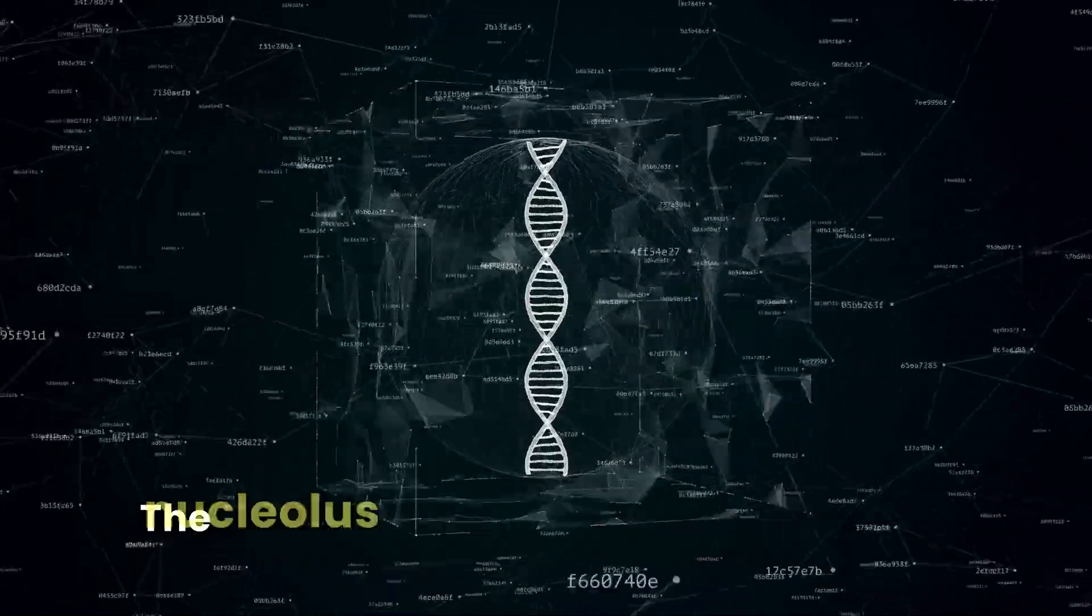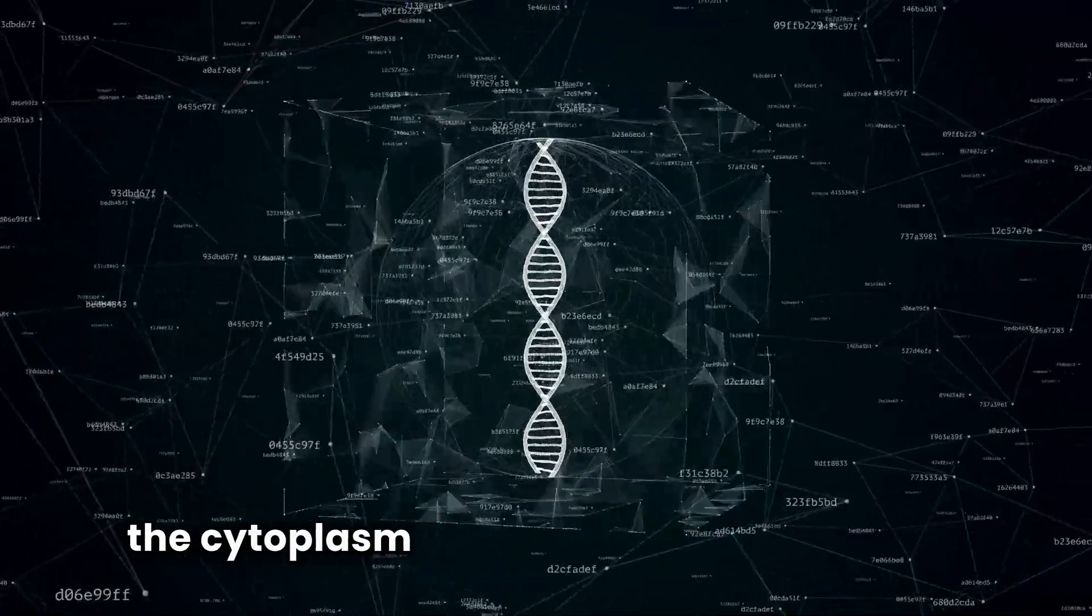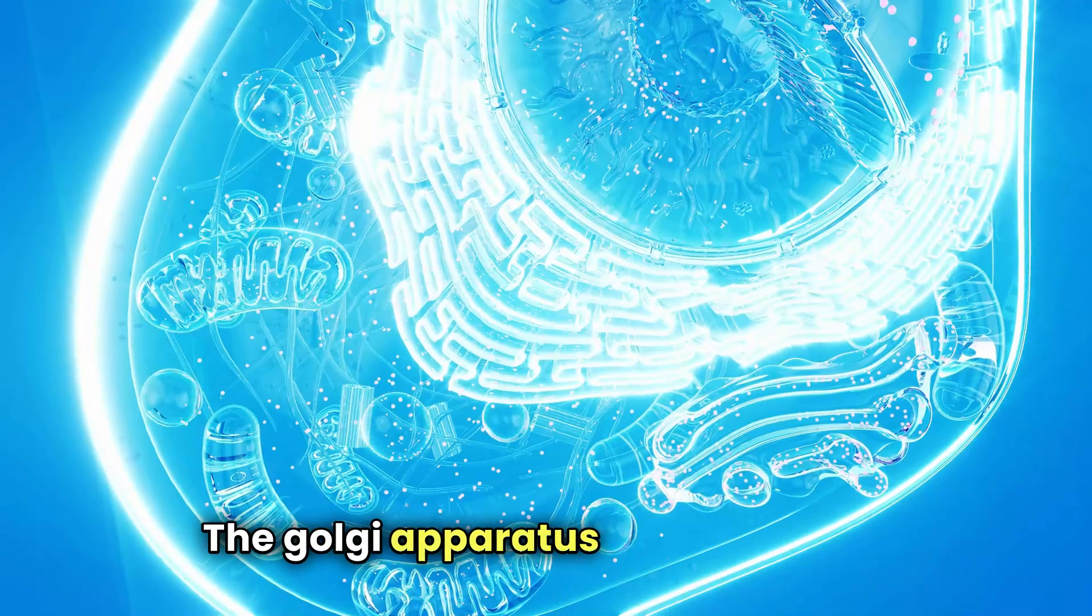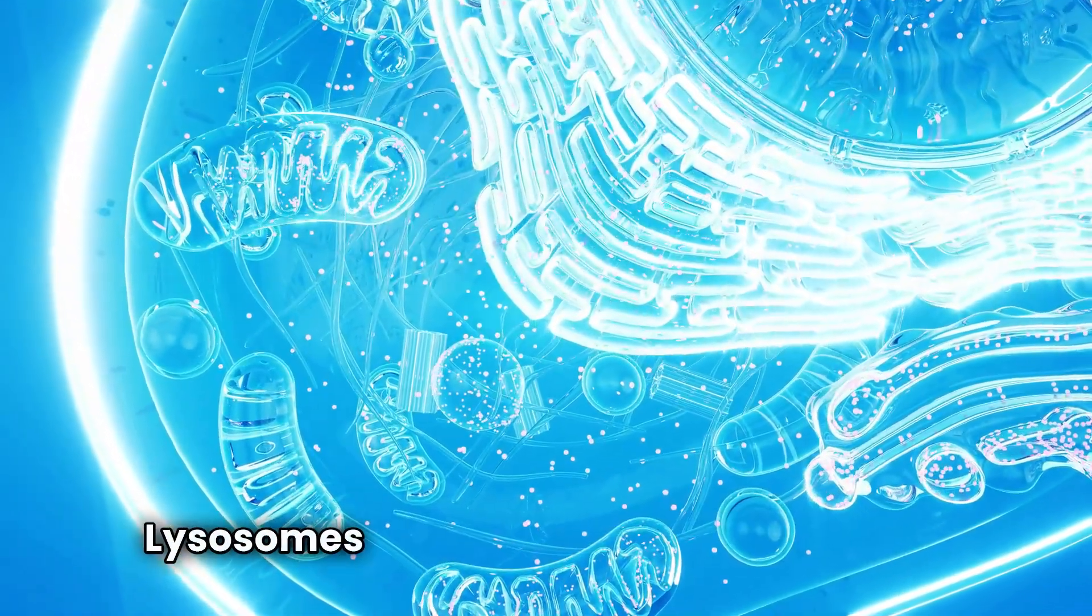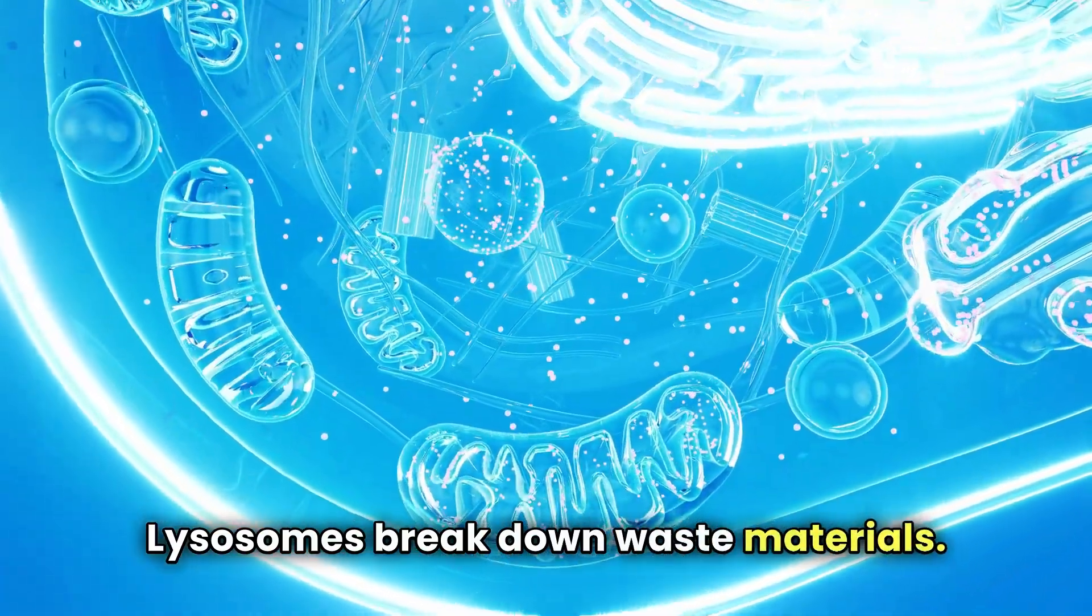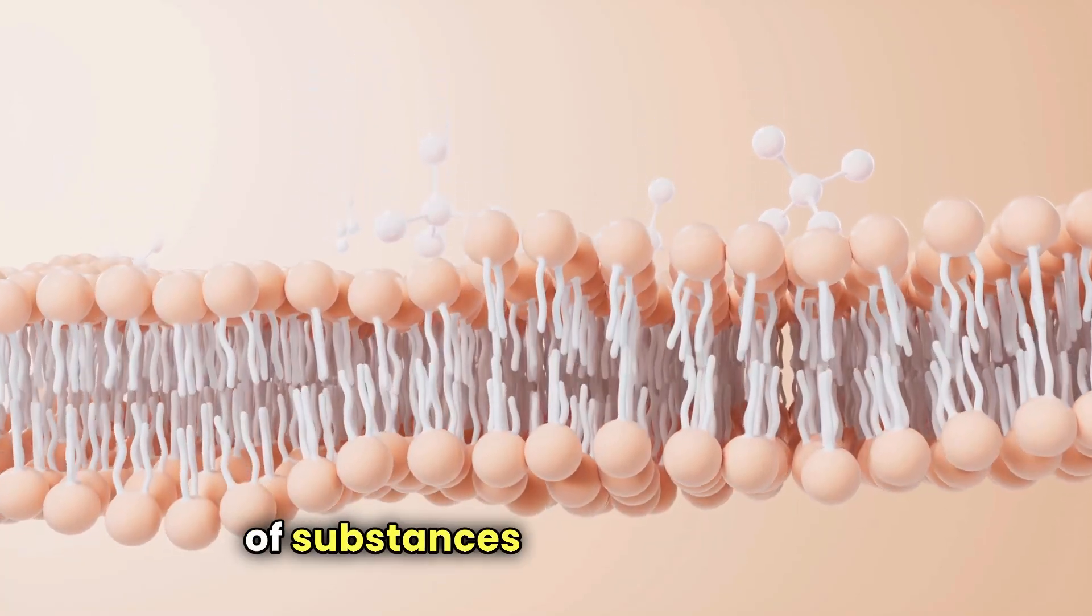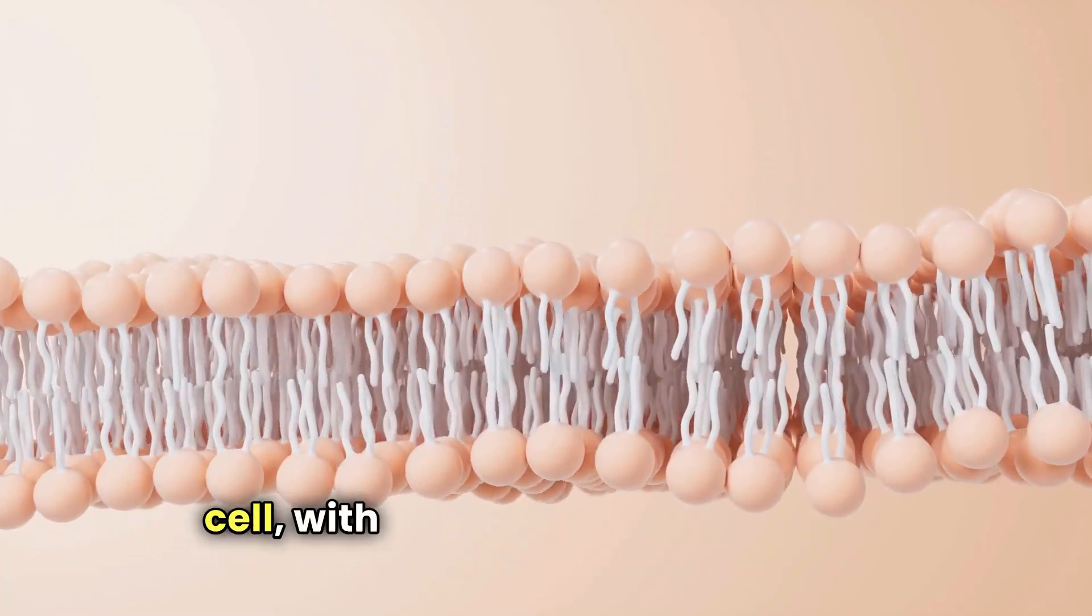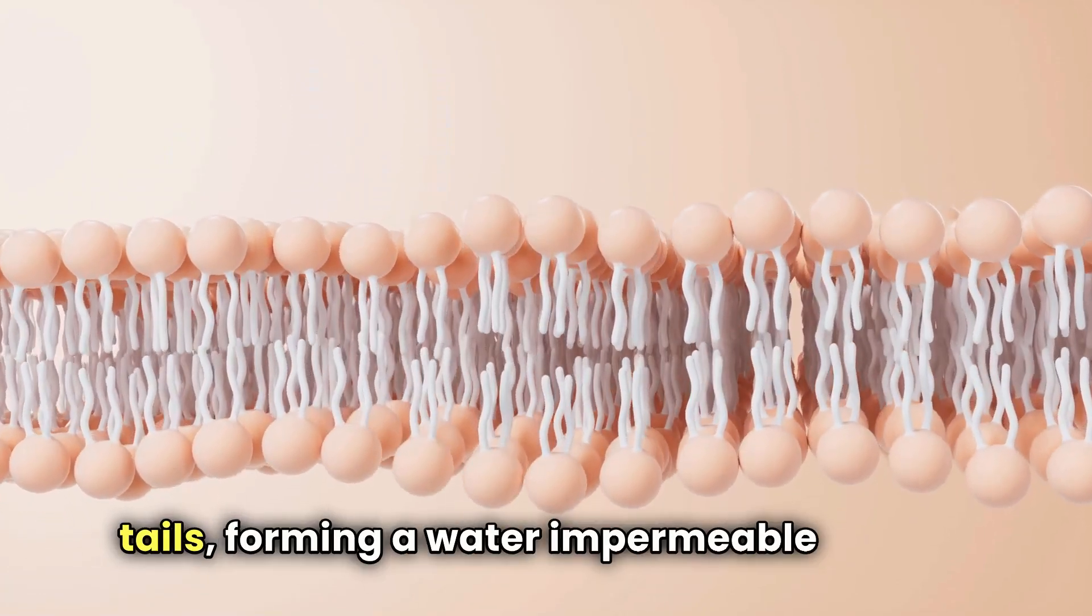Inside it, the nucleolus produces ribosomes, which are either free in the cytoplasm or attached to the rough ER. The Golgi apparatus packages and distributes proteins and lipids. Lysosomes break down waste materials. Finally, the cell membrane controls the movement of substances in and out of the cell, with its hydrophilic heads and hydrophobic tails forming a water-impermeable barrier.